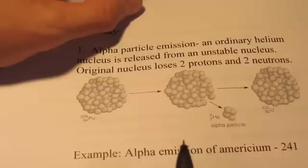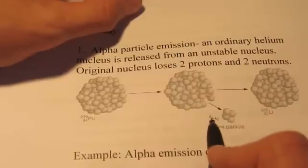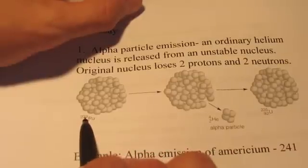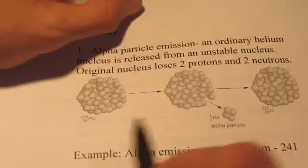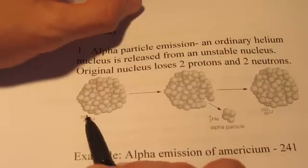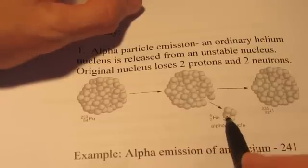Now we also lose two neutrons. So if you lose two neutrons and two protons, the mass will go down by four. So we start with a mass of 239, and we end up with a mass of 235. So we start with an atom of plutonium with a mass of 239. We end up with an atom of uranium with a mass of 235, plus an alpha particle.